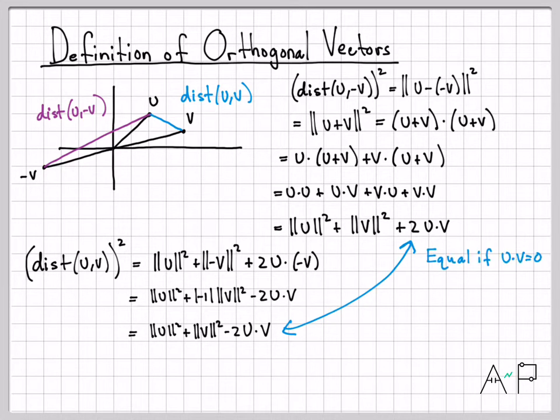Let's compare these two quantities. They look very similar. They both have ||u||² and both have ||v||². They are only different here at the very end. This is minus 2u·v, and this is plus 2u·v. So that's interesting. If it wasn't for this last term, these two things would be equal. And in fact, if u·v is 0, then they are equal.